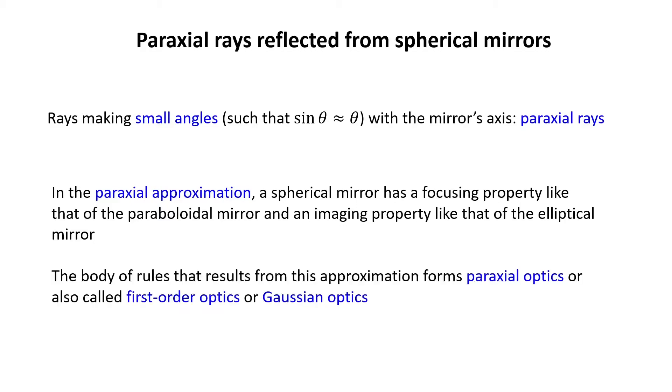The body of the rules that results from the approximation forms paraxial optics, also called first-order optics or Gaussian optics.